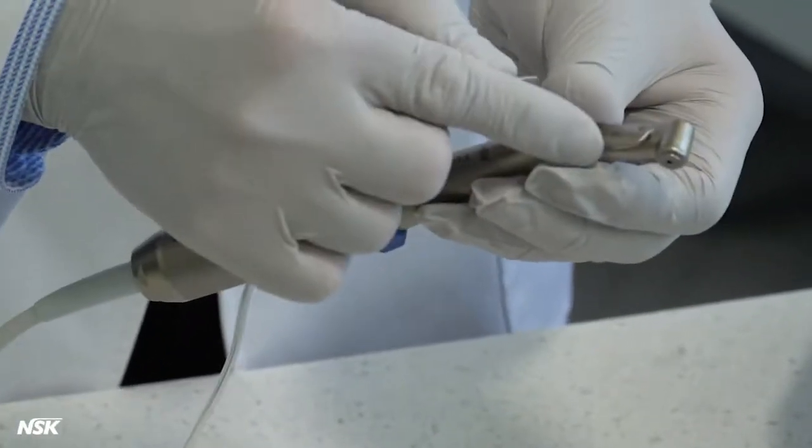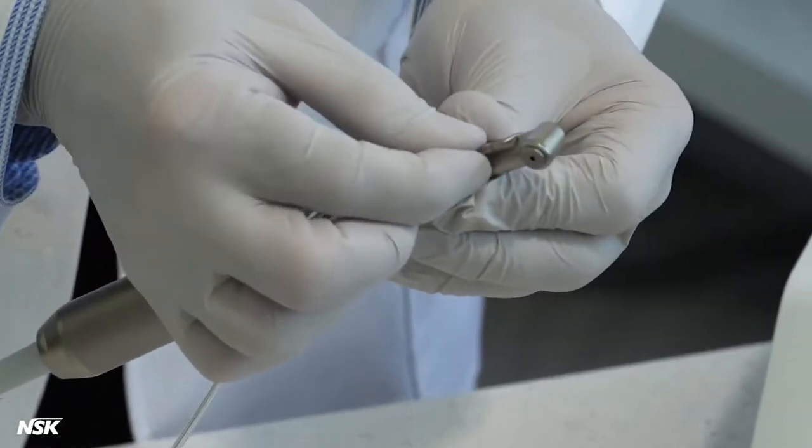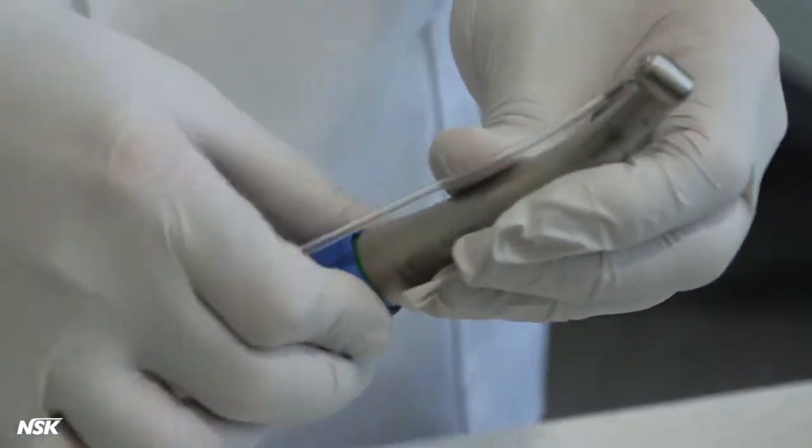Single external spray is very common, in which case, connect the end of the irrigation tube directly to the external spray nozzle of the attachment.